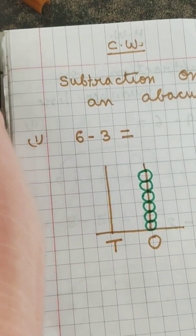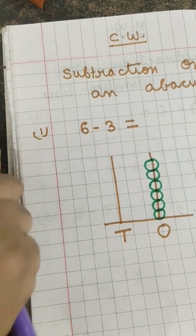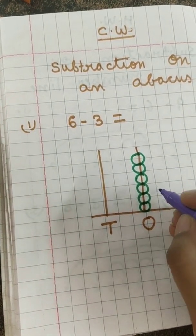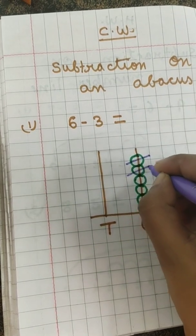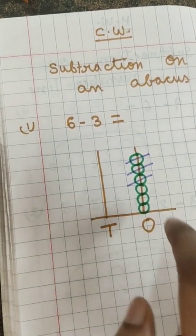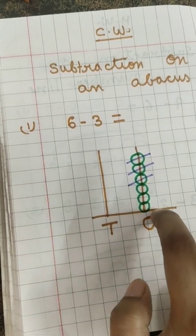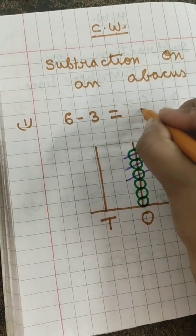So this time we have to cross number three. So we will cross the first ball, one, then second ball, then third ball. How many balls are left? One, two and three. What will our answer? Number three.